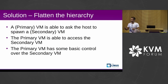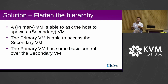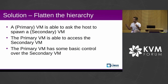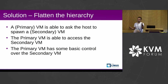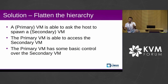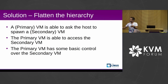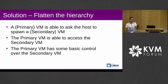So what we thought of was to flatten the hierarchy. We create a special VM — we call it a primary VM — that is able to talk to the host and request resources. The VM is given some resources at boot: a number of CPUs, some storage, some memory. You can ask the host to take some of those resources away from itself and use them to spawn secondary virtual machines, and the primary VM can then control them — access, delete, pause, or modify them.